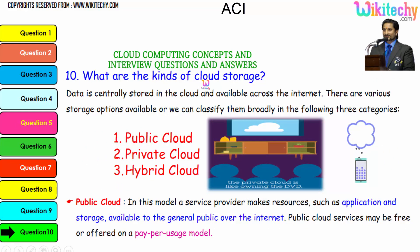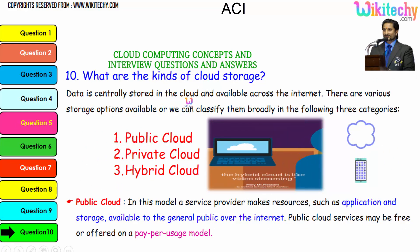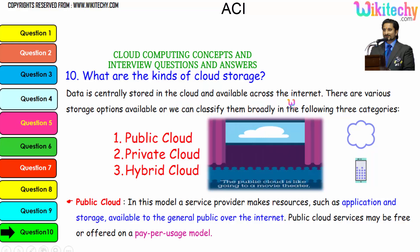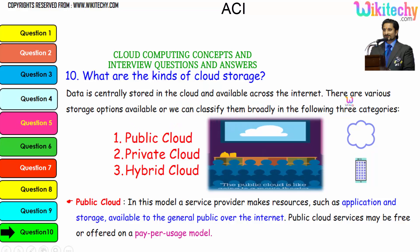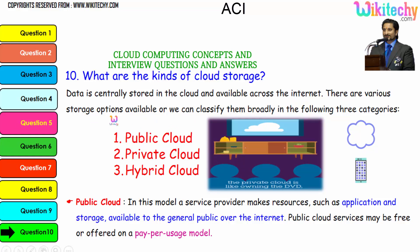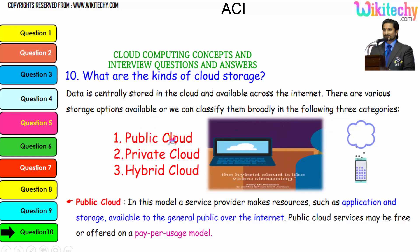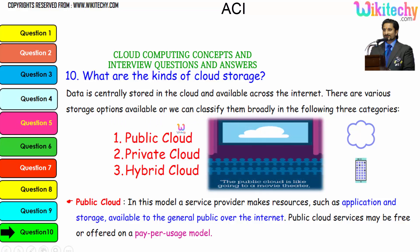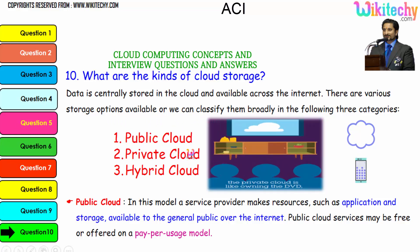Now let's talk about the kinds of cloud storage. Data is centrally stored in the cloud and available across the internet. There are three major storage options, which you can broadly classify into three categories: Public Cloud, Private Cloud, and Hybrid Cloud.